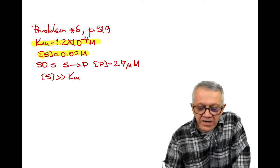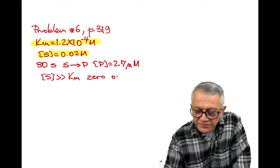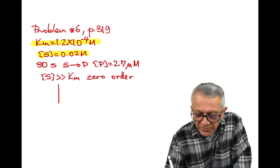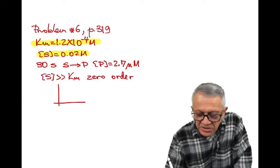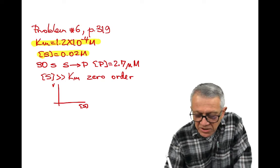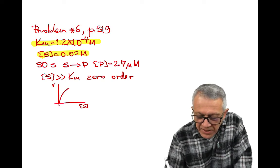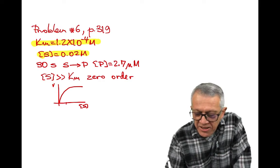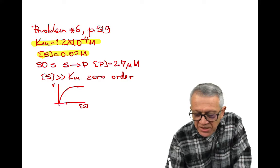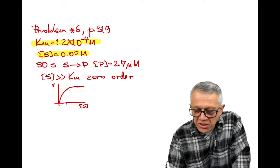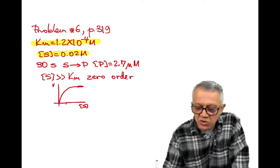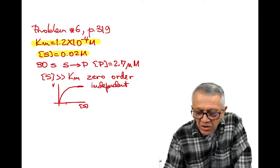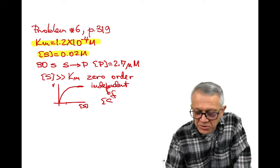Therefore we are here in a zero-order reaction. Do you remember this situation where we have this graph? This is the velocity, this is the substrate concentration. If the substrate concentration is much larger than Km, then we are in a zero-order reaction. This is completely independent of the concentration of the substrate.